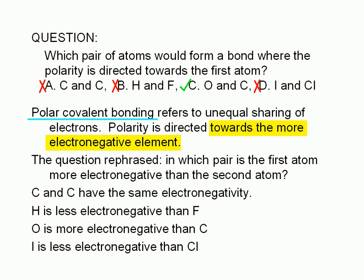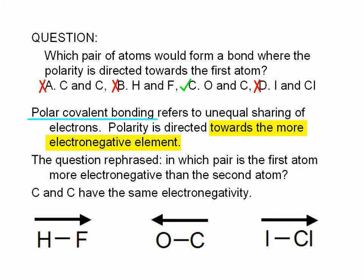Iodine is in period 5 while chlorine is in period 3. We can represent the polarity of the hydrogen-fluorine, oxygen-carbon, and iodine-chlorine bonds using the following diagrams. Note that the arrows are drawn pointing towards the more electronegative atom.